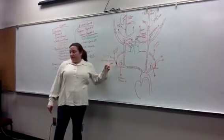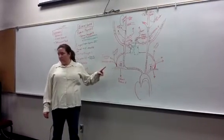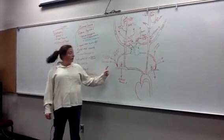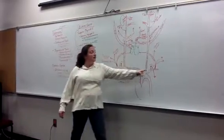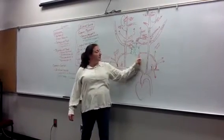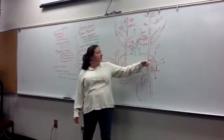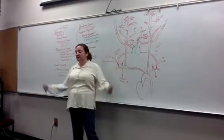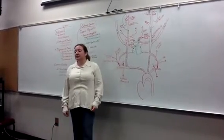The inferior thyroid actually loops behind the common carotid to get to the backside of the thyroid gland, so you'll see it curve around behind there. The inferior thyroid curves behind the right common carotid on this side and behind the left common carotid on that side to get to the thyroid gland. That's all the branches off the subclavian.